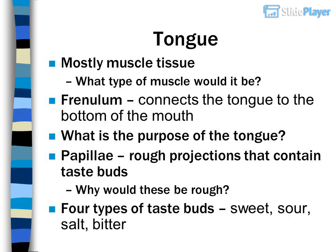Tongue: mostly muscle tissue. What type of muscle would it be? The frenulum connects the tongue to the bottom of the mouth. What is the purpose of the tongue? Papillae are rough projections that contain taste buds.